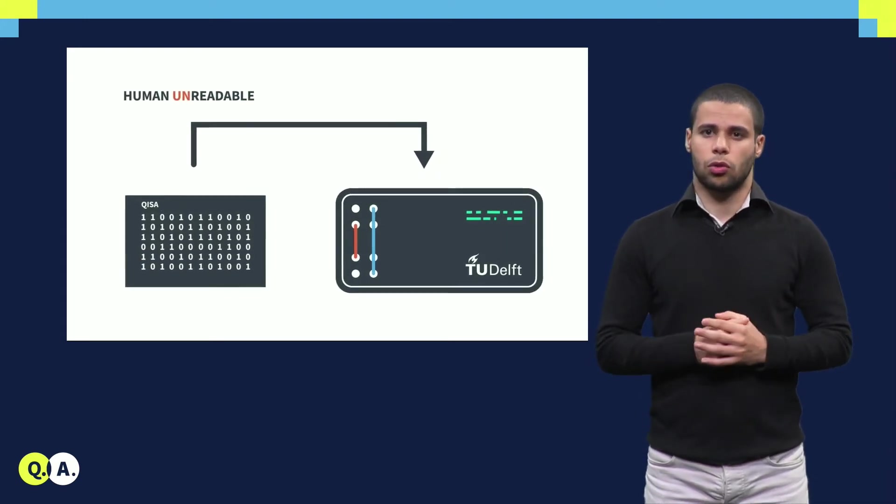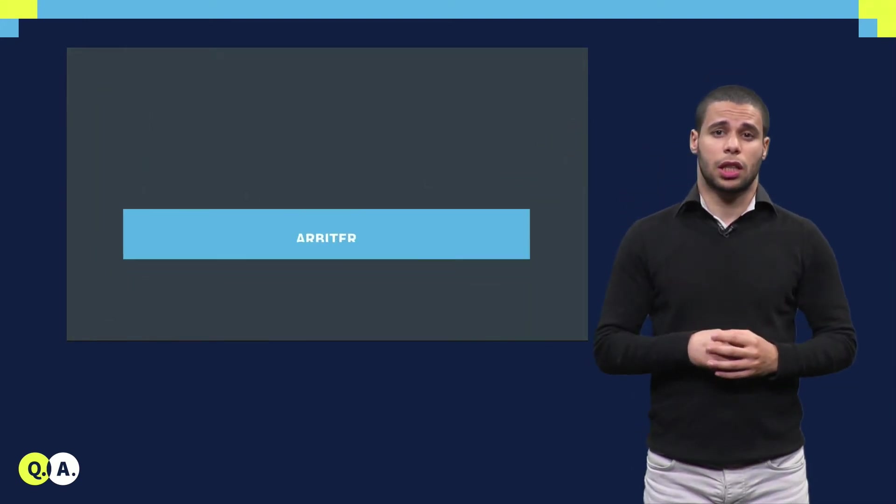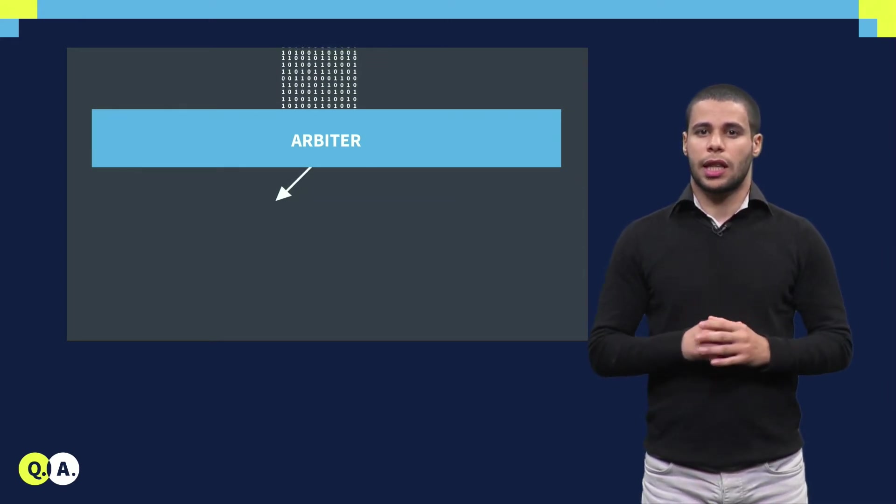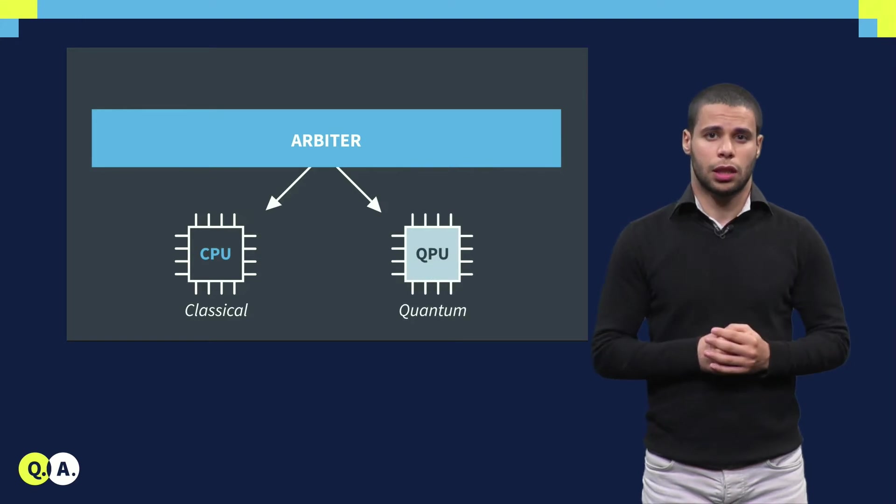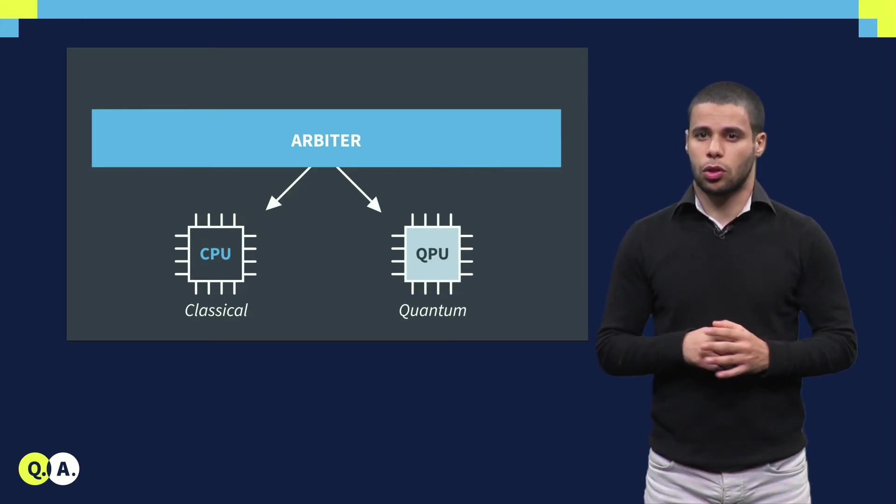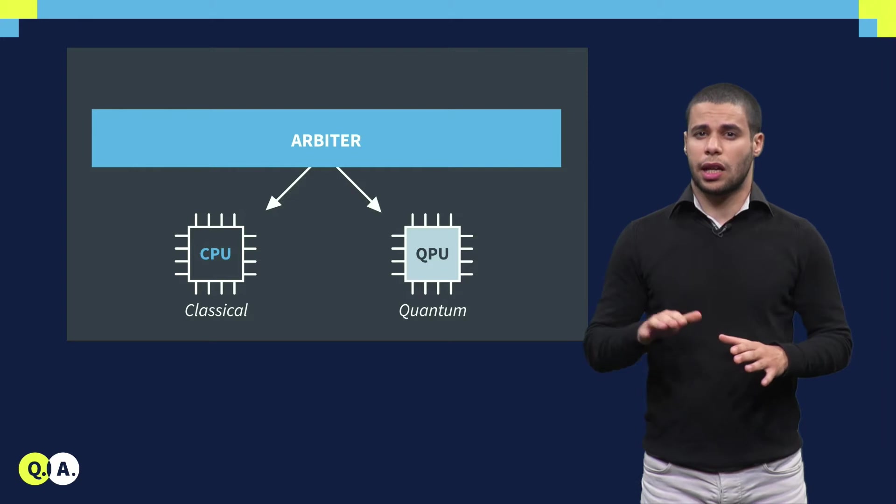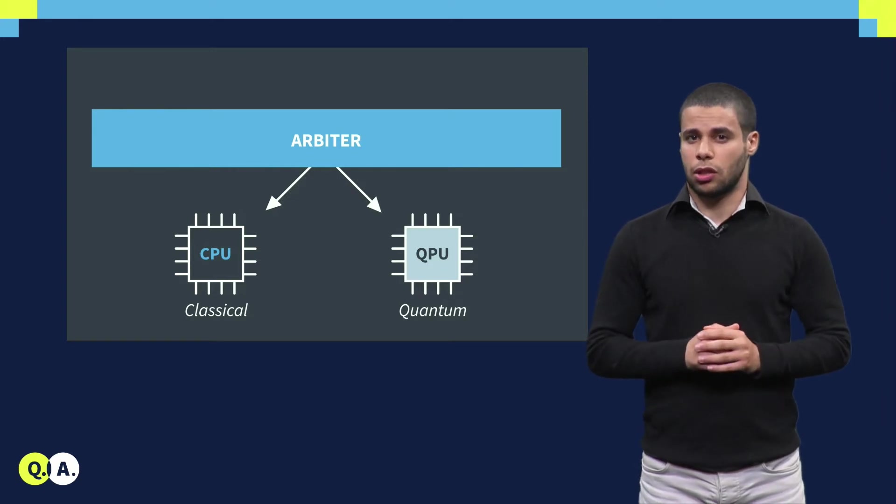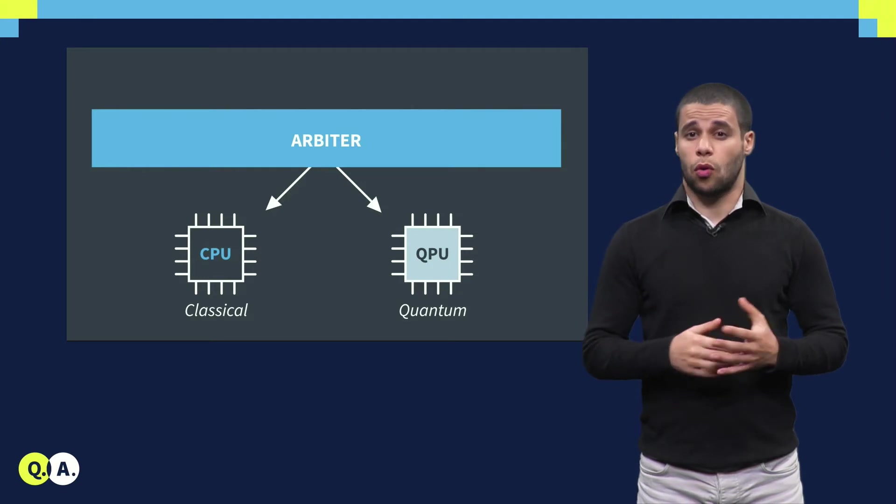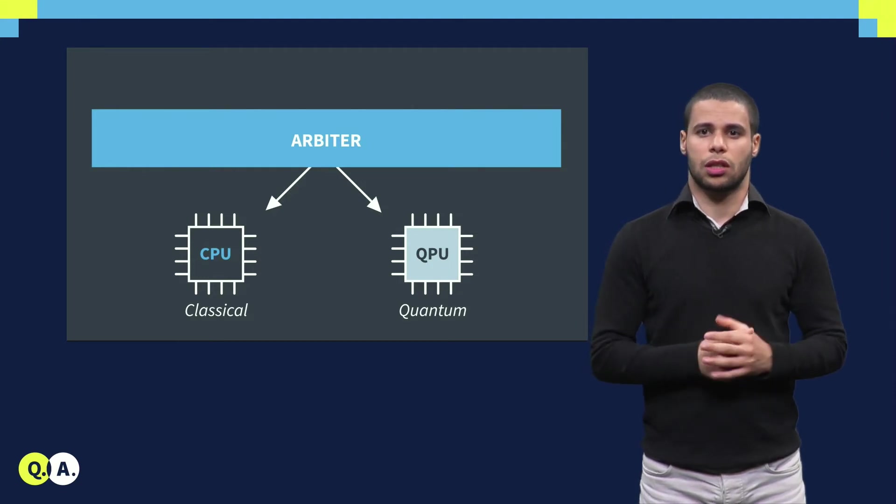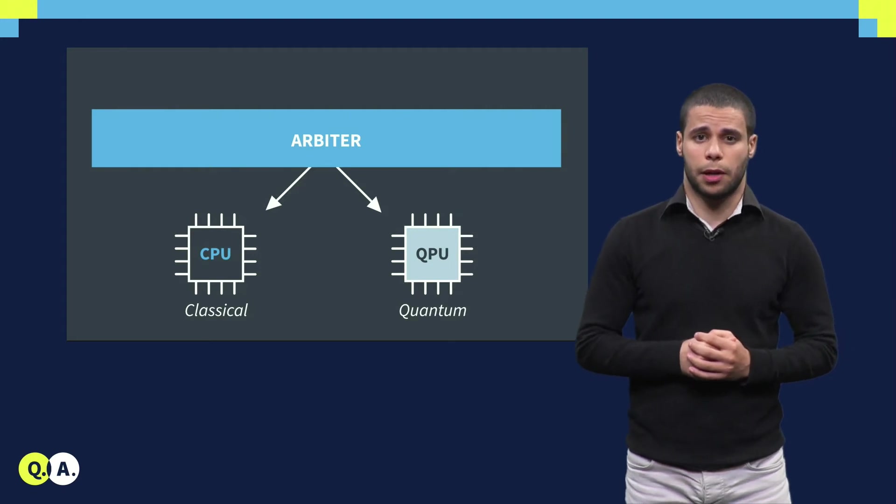When loading the executable in our microarchitecture, it is important to distinguish the classical and quantum operations. For that, an arbiter unit is responsible for sorting those instructions to distinguish the classical and the quantum instructions and route them to the appropriate pipeline, so the classical instructions to the classical pipeline and the quantum instructions to the quantum pipeline.